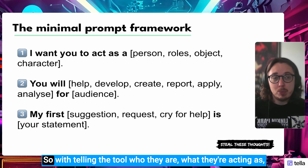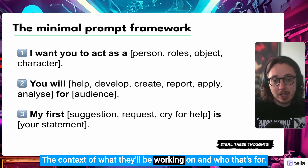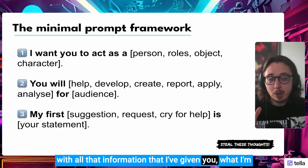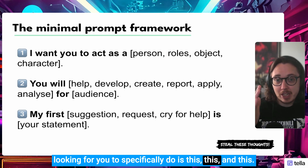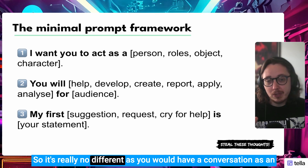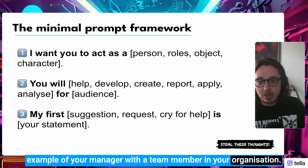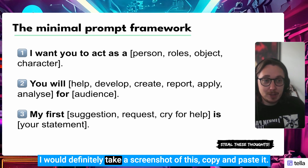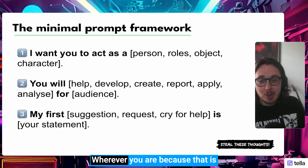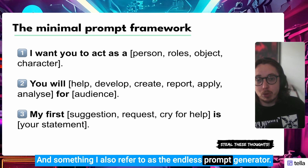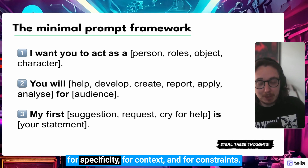That last part is your constraints. So by telling the tool who they are, what they're acting as, the context of what they'll be working on and who that's for — the final part sets the constraints: with all the information I've given you, what I'm specifically looking for you to do is this. It's really no different from how you'd have a conversation with a team member. All we have to remember is these three lines — for specificity, for context, and for constraints — the endless prompt generator.